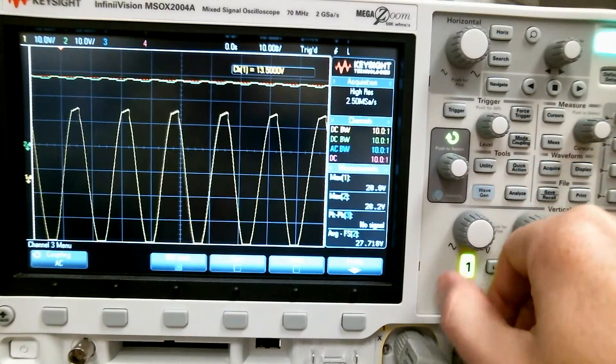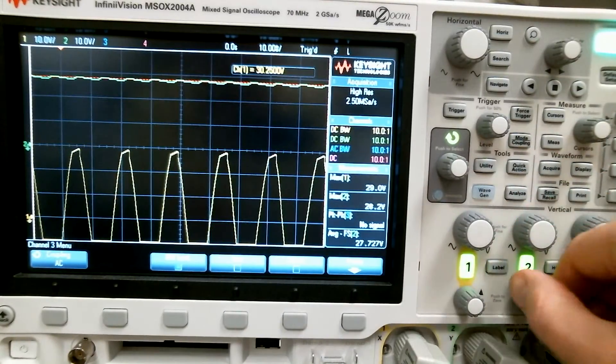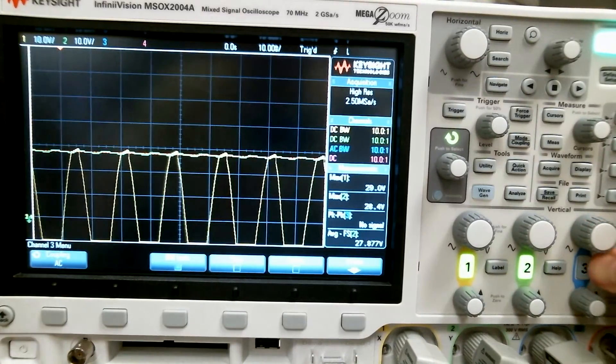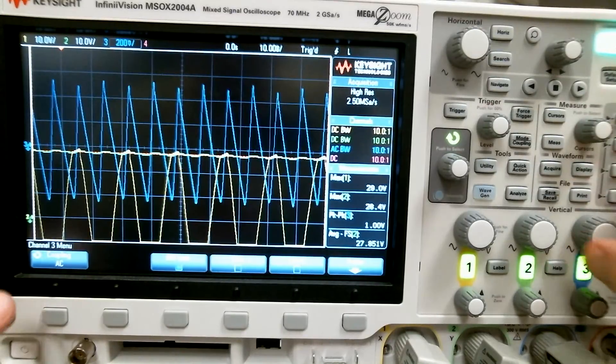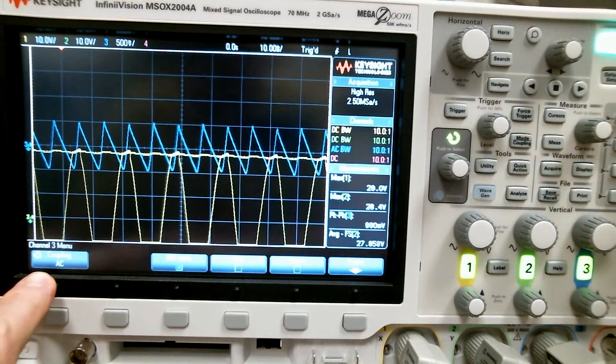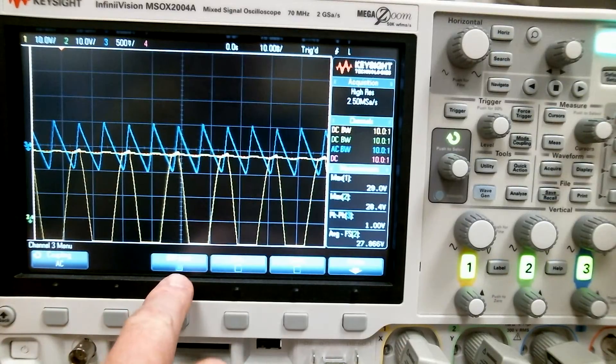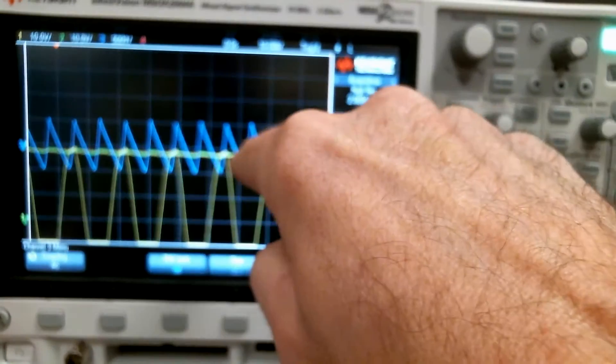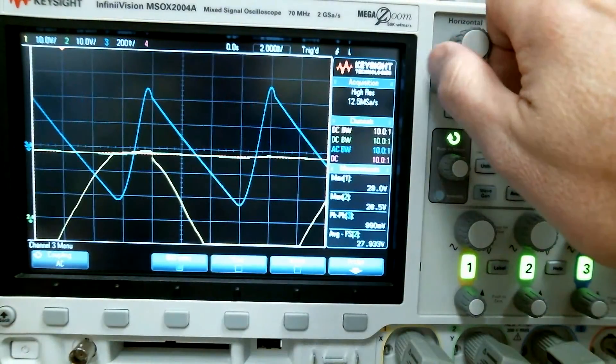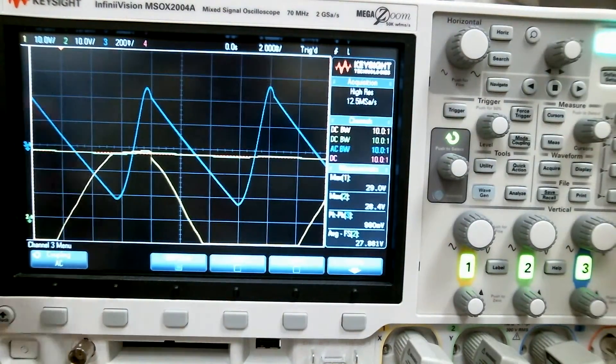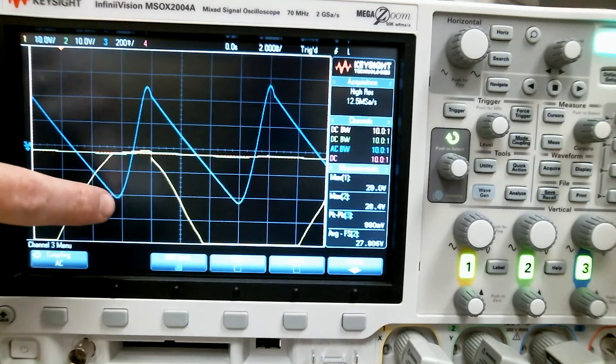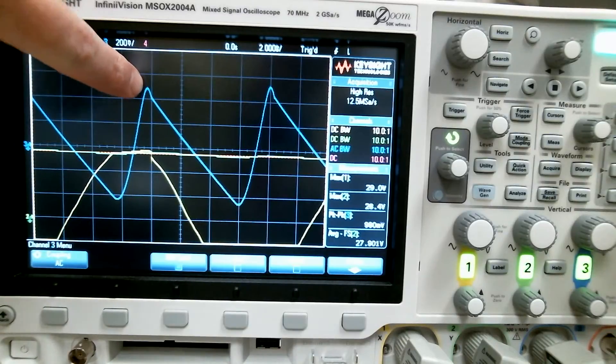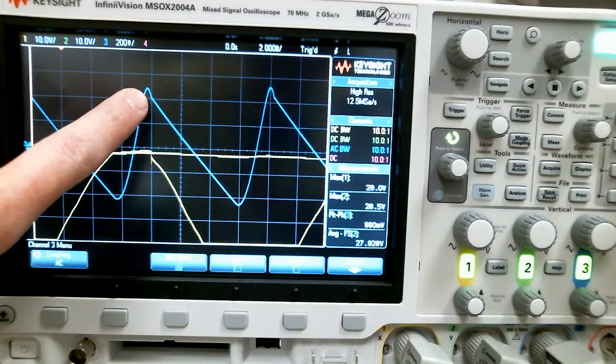Channel 3, you remember, is also across the capacitor. If I turn that on, I have channel 3's coupling set to AC bandwidth limit because these are 60 Hertz and I don't need all 70 megahertz. All this is, is zooming in on channel 2, the output, to see the ripple only. So the input comes up, the diodes turn on - when the diode turns on, either one or two, output voltage rises and charges up.